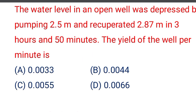Next question: the water level in an open well was depressed by pumping 2.5 meters and recovered 2.87 meters in 3 hours and 50 minutes. The yield of the well per minute is — option A 0.0033, option B 0.0044, option C 0.0055, option D 0.0066. The correct answer is option C, 0.0055.